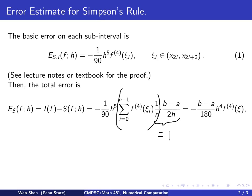And we can also cancel out an h here. You cancel this out with this 5. This 5 changes into power 4. And you combine the 2 with 90. And then you end up with negative b minus a over 180, and now h to the power 4 times f fourth derivative at ξ.